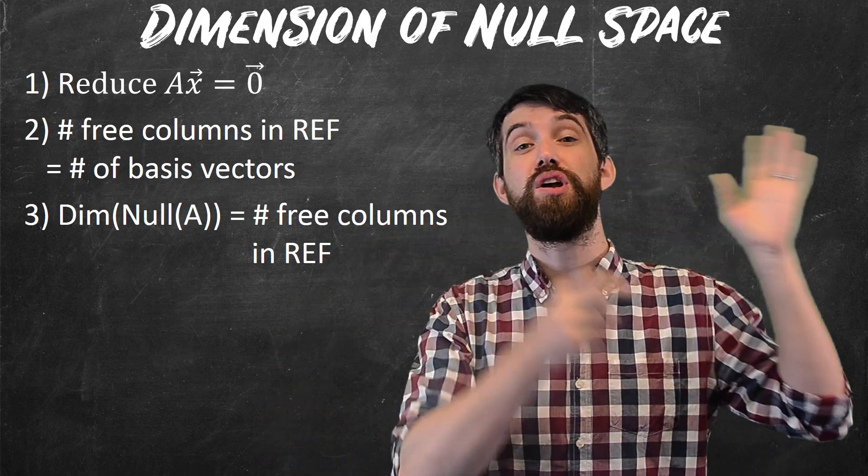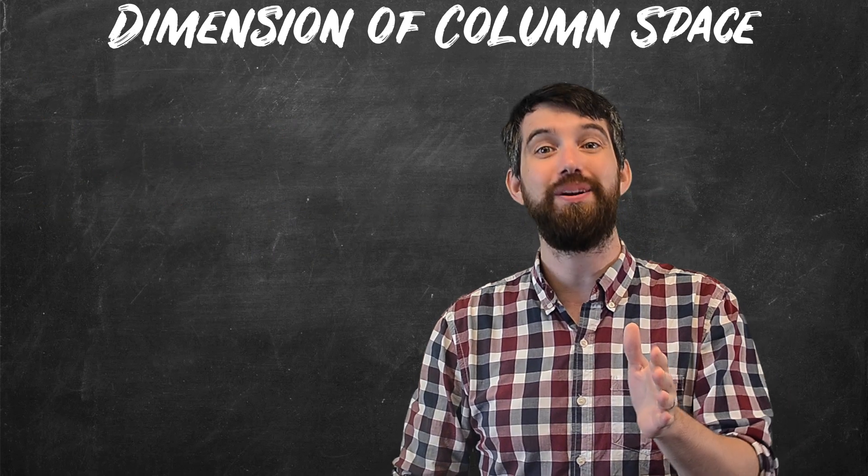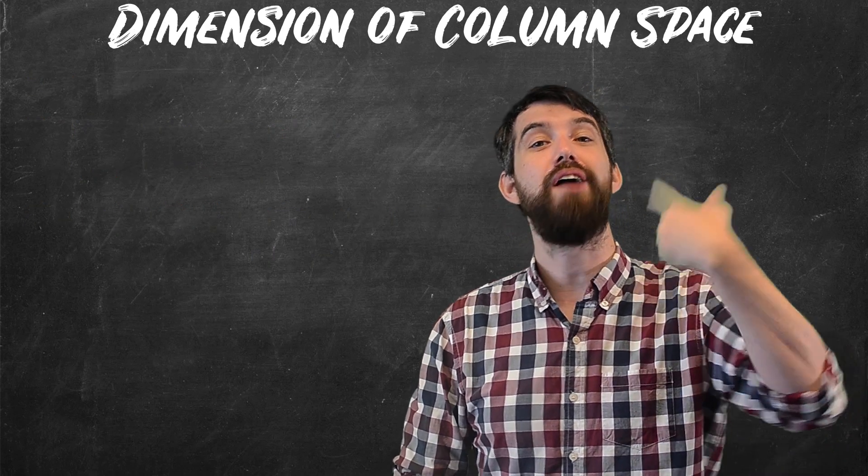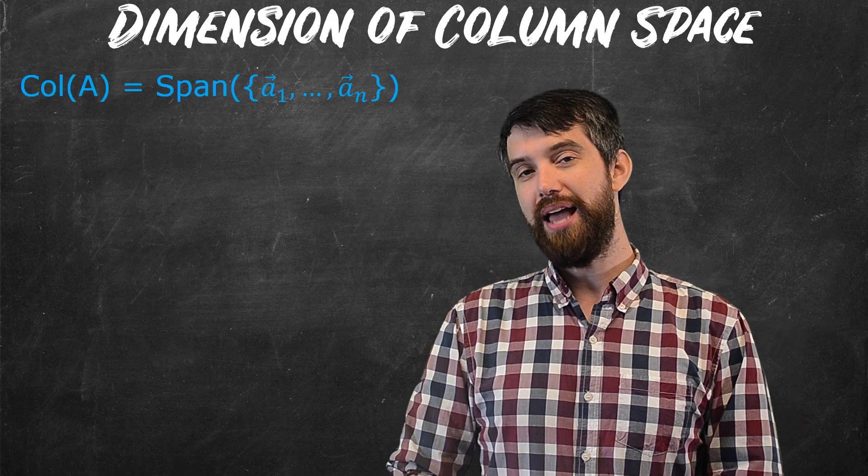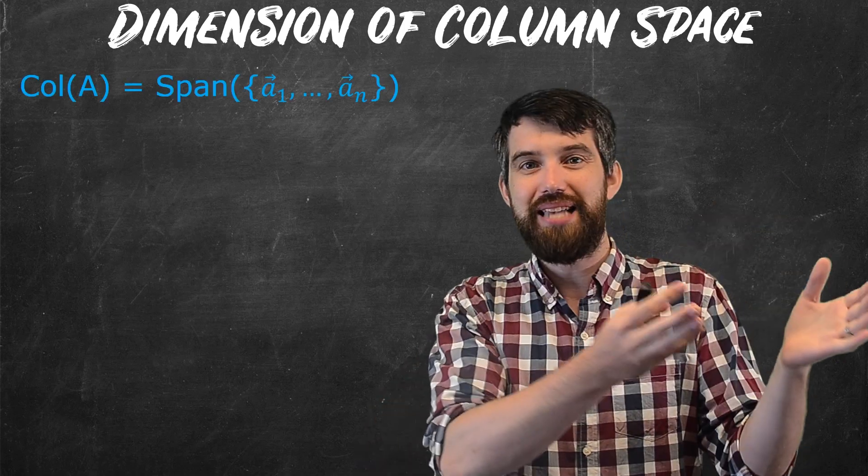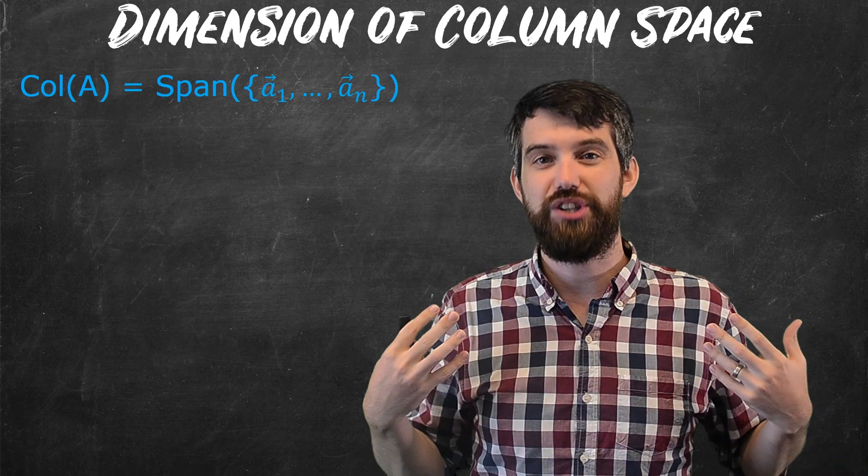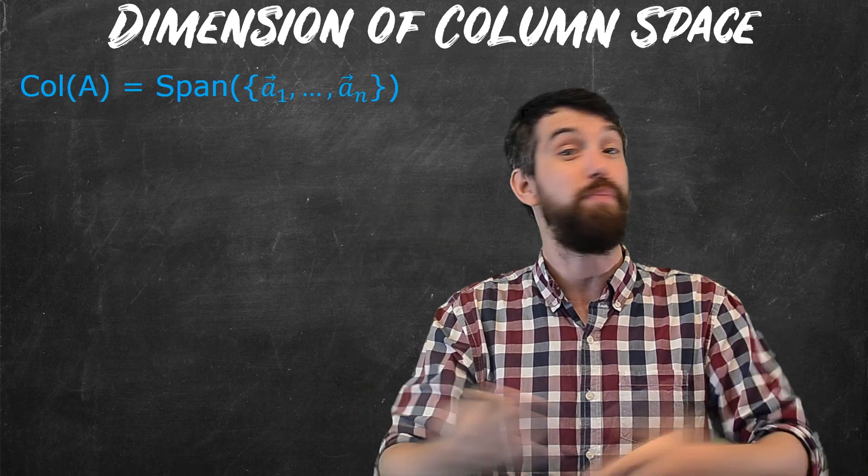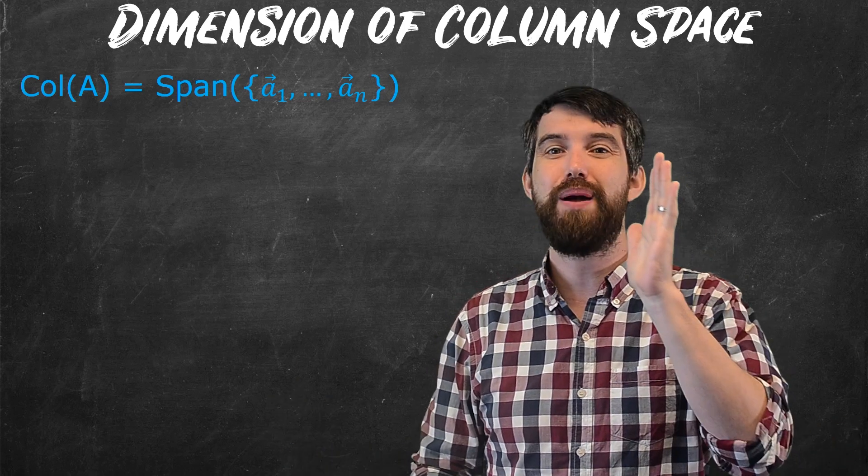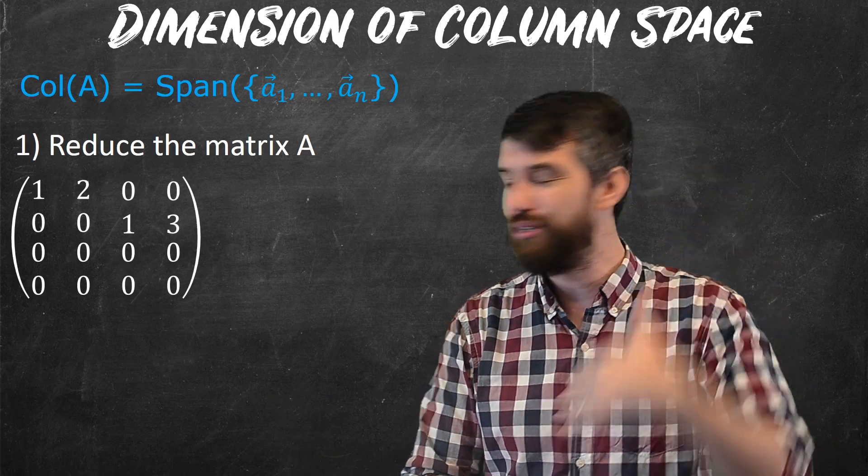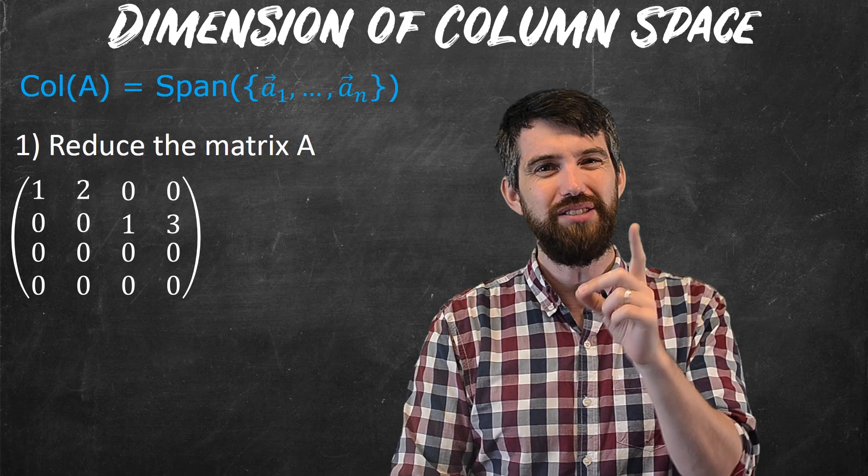What about dimension of the column space now? Well, what's the column space? Remember, it is the span of the columns of the matrix A. And indeed, because a basis has to both span and be linearly independent, the only thing to check in the column space is the linearly independent part because it gets a span part for free. So if I take my matrix like here is the same A, I want to reduce it in the exact same way. Because here's the trick.